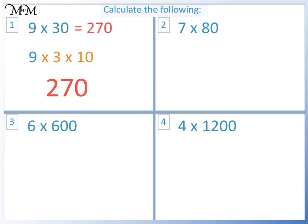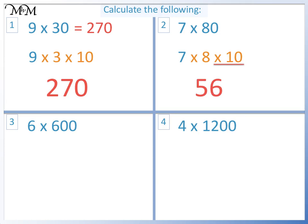Question 2: 7 times 80. This is the same as 7 times 8 times 10. 7 times 8 equals 56, times 10 equals 560. So 7 times 80 equals 560.